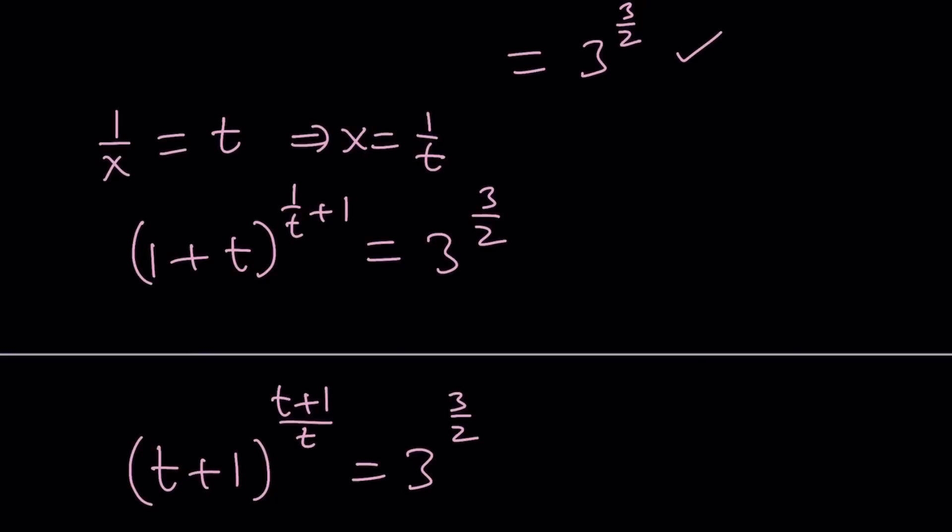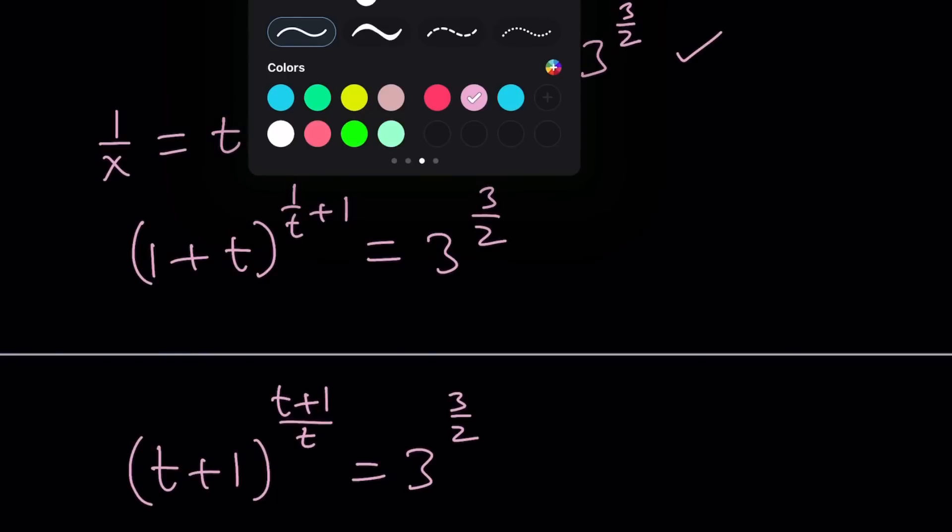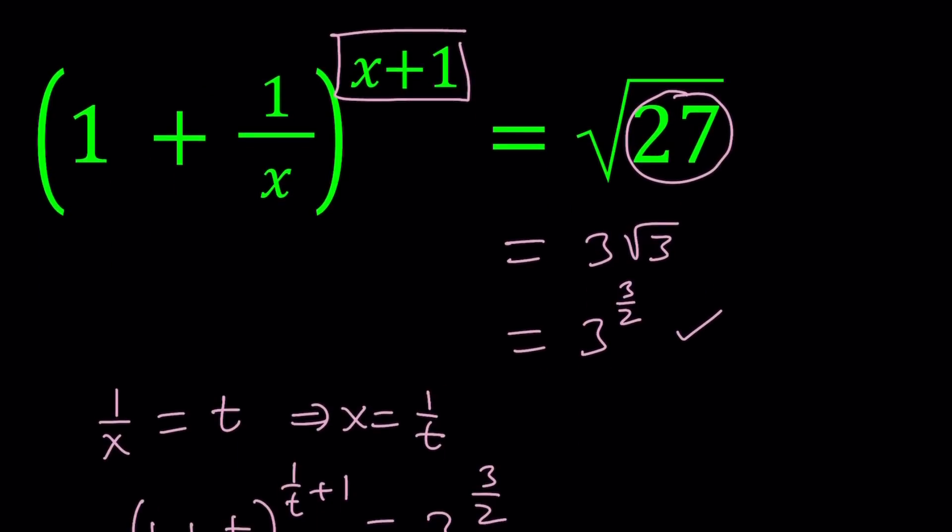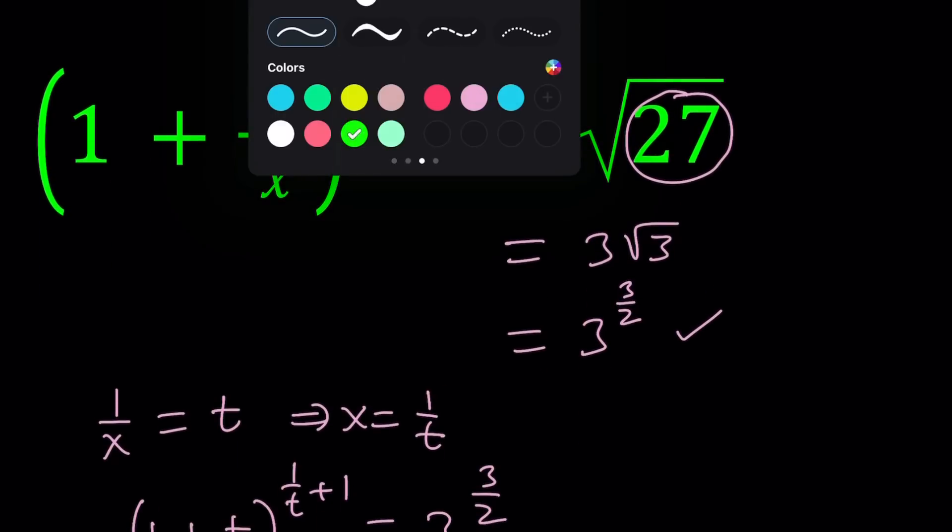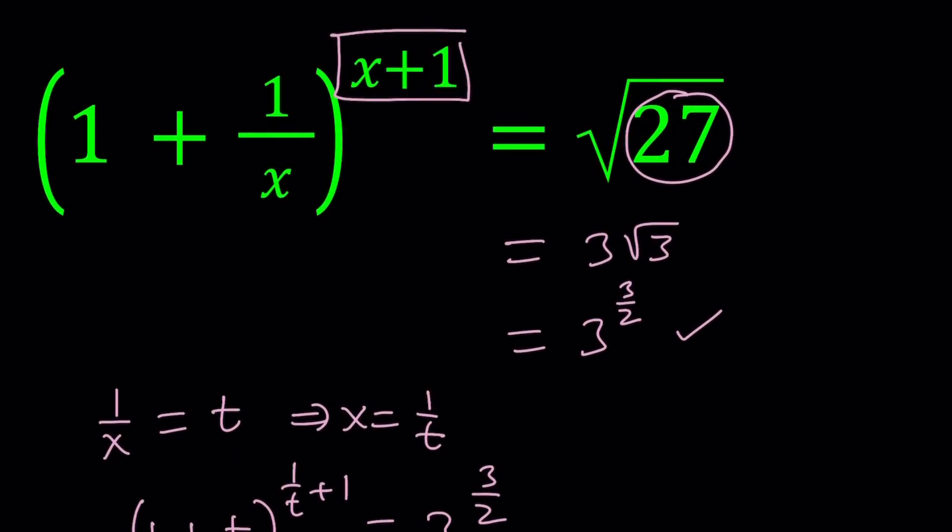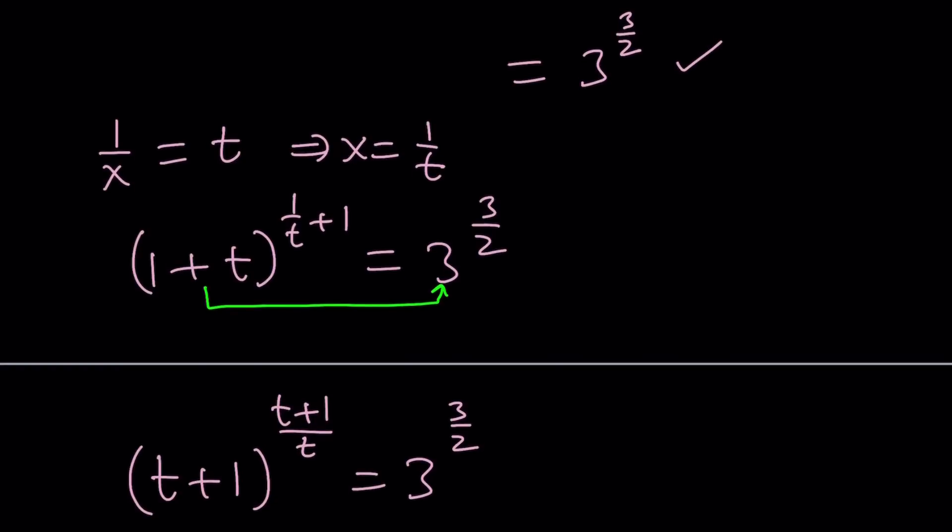Now, if you look at this expression very carefully, you're going to notice that t plus 1 equals 3 actually works. Right? So t plus 1 equals 3 actually works. That means t is equal to 2.